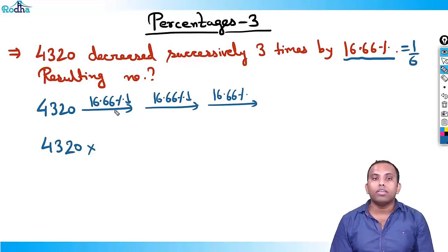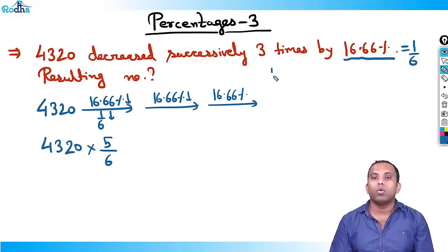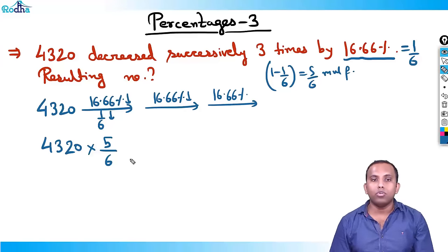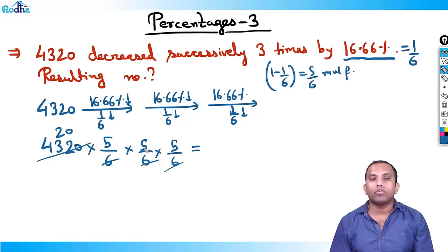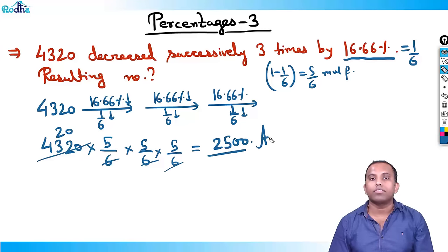4320. Decrease of 1/6 — what is the multiplying factor? 1 minus 1/6 is 5/6. Again, 1/6 decrease — multiply by 5/6. Again, decrease by 1/6 — multiply by 5/6. 6 × 6 × 6 is 216, double is 432. So 20 × 5 × 5 × 5 = 2500. The answer is 2500.